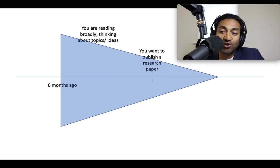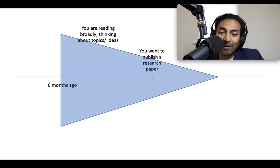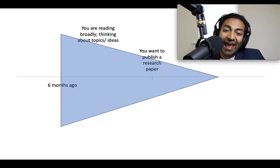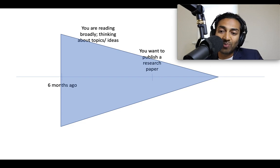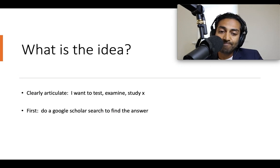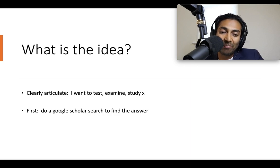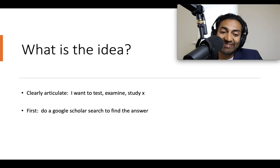This could be a narrow domain — for instance, GI oncology or melanoma — but you still need to be reading about different concepts and different ideas in that field, thinking broadly about it. And then, only then, after a period of time and discussion, do you get to the point where you want to publish a research paper. It's very important that when you set out to publish, you clearly articulate: I want to test whatever it is. I want to examine whatever it is. I want to study this topic.